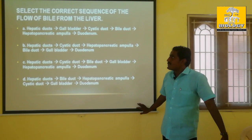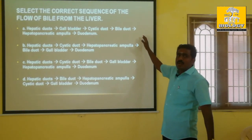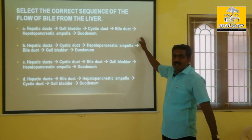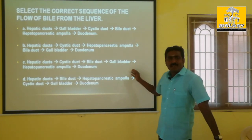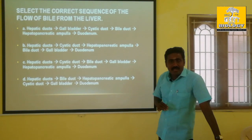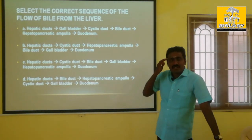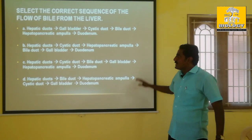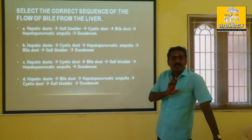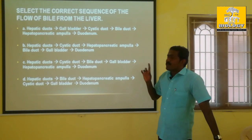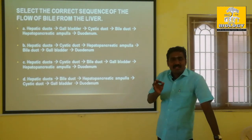Looking at the first option — this is a full memorizing question, but it is also concept oriented. The liver and duodenum are key parts, and checking the diagram will help find the answer.